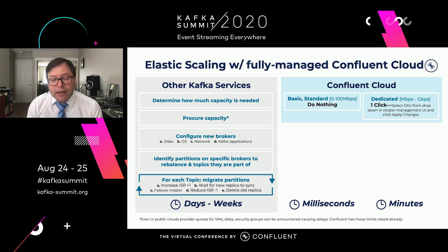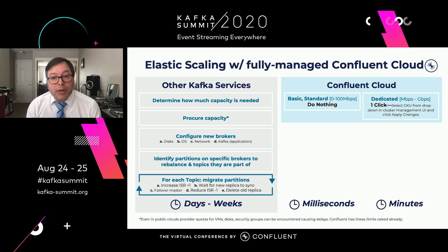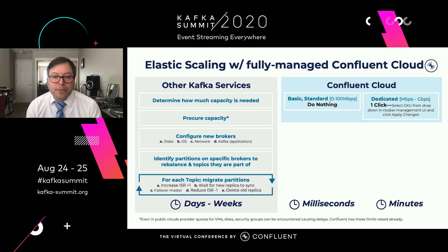On our dedicated tier, designed for larger throughput workloads — things in the gigabyte per second range — just go into the management UI, click the dropdown for units for use, decide how many you want, and click apply changes. The changes start rolling out within minutes. All of these same things are still happening, but they're fully managed within our service, so they're completely automatic for you.